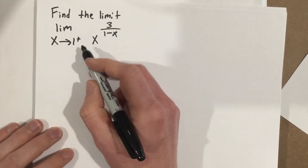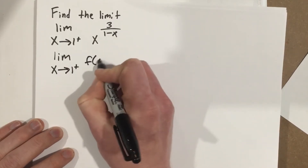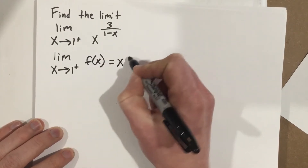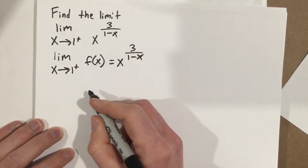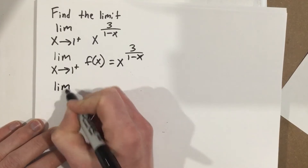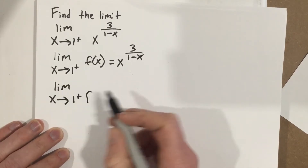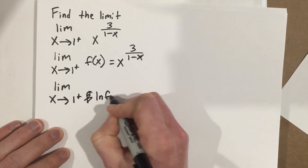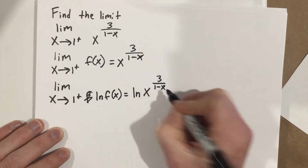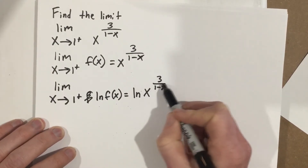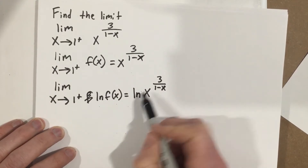Let's start by rewriting this as the limit as x approaches 1 from the right. We're going to call this f of x equals x to the 3 over 1 minus x — all we're doing is labeling that this is a function. Then we're going to take the natural log of each side.